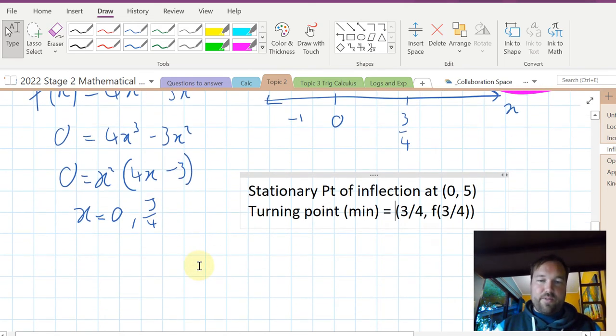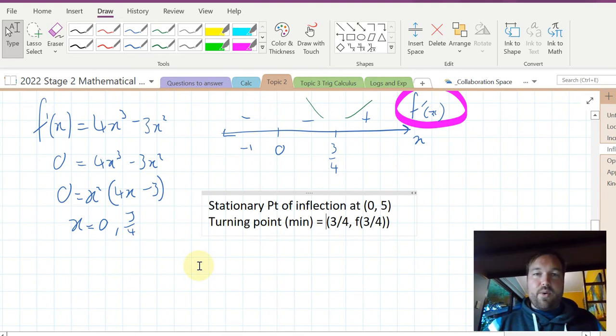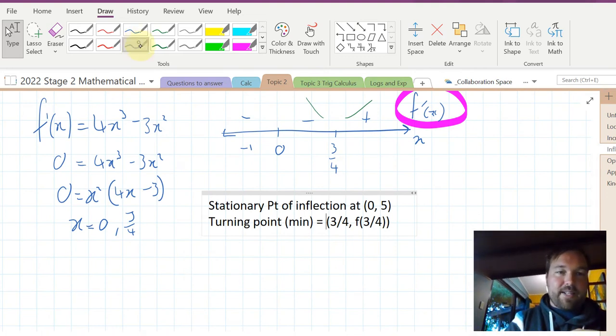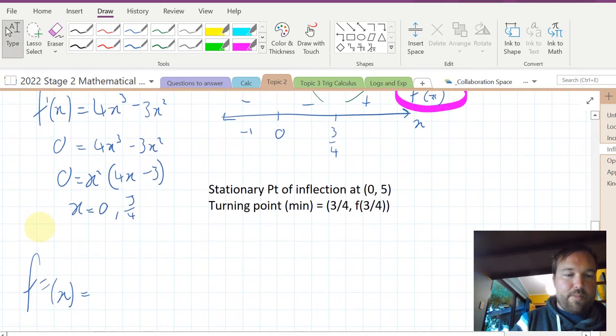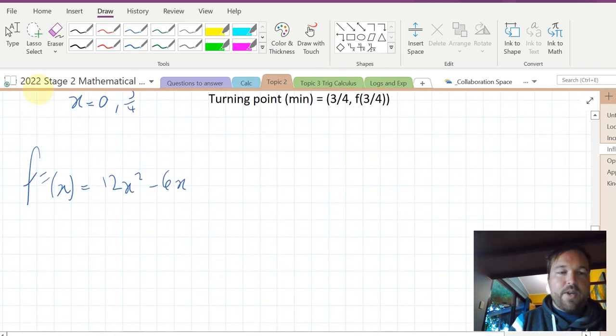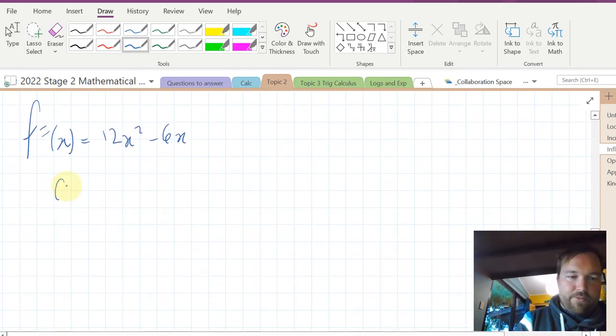Let's consider the second derivative. In order to get all the points of inflection, you must do the first and the second. So, second derivative. We look back at the first derivative, and we make this 12x^2 - 6x. We set it equal to zero. I'm going to factorize it all in one step. So 6x out, 2x minus 1. x is equal to zero and a half.